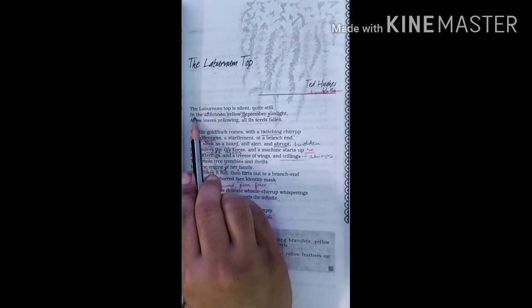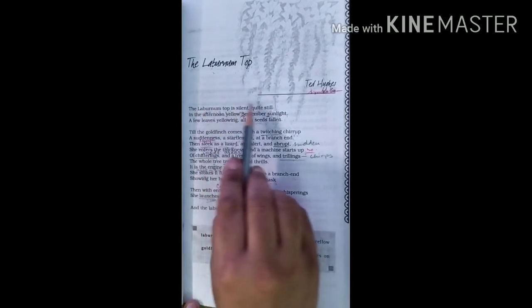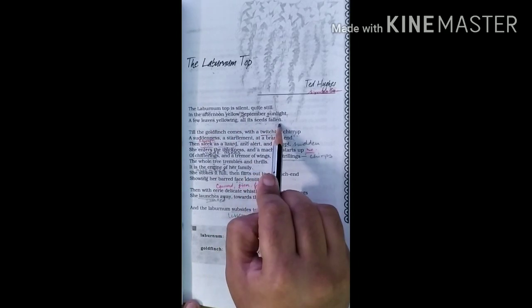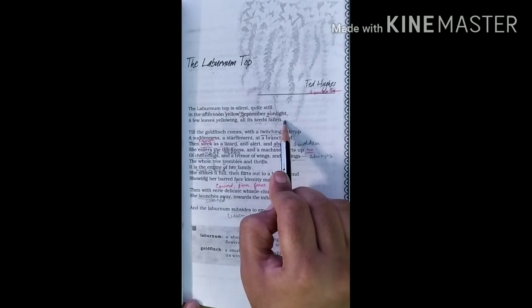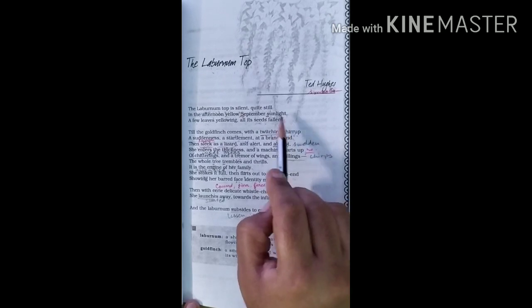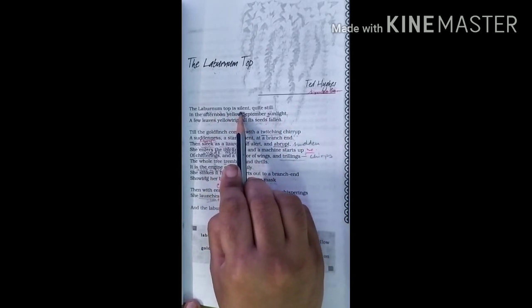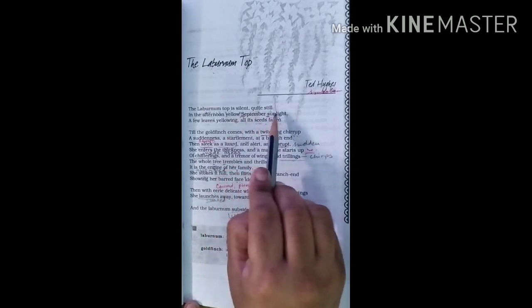See the explanation of this first stanza. You can easily see that in the very first stanza we have only three lines where the poet is saying that he saw a Laburnum tree with its yellow flowers. In his words, the Laburnum top is silent. The tree is still and looks dead-like in the daytime of September. Even the sunlight is also yellow.